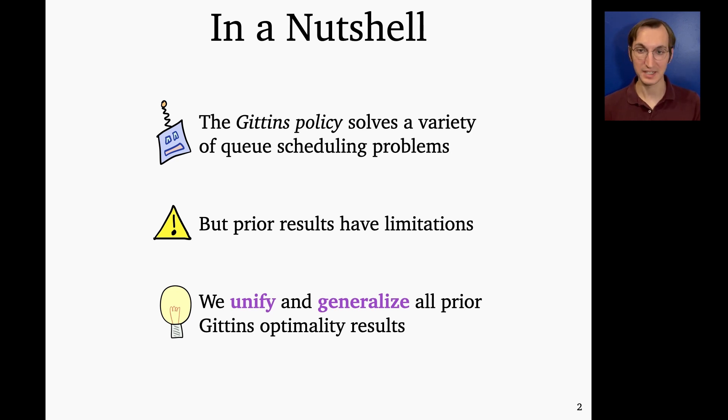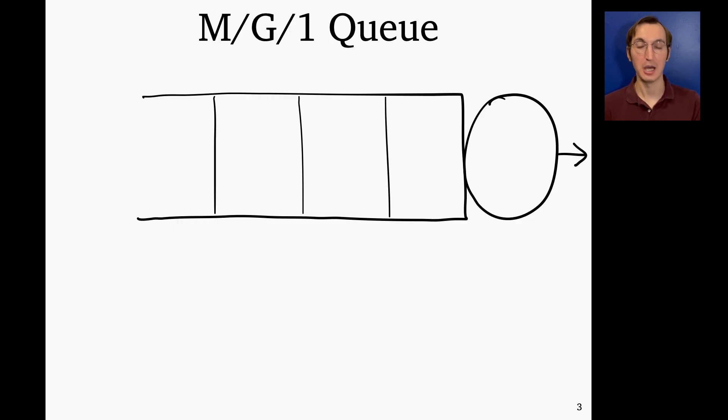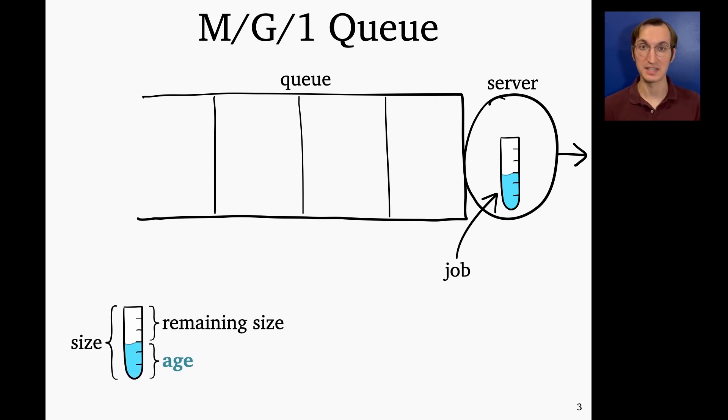So let's get into it. I'm going to start by telling you about the M/G/1 queue, which is the queuing model we're going to be working with in this talk. So we've got a single server, which can serve one job at a time, and a queue, which can hold any number of jobs waiting. This is what a job looks like. We're going to draw it like a test tube whose height is its size or service requirement. That's how long we need to serve the job before it completes, and we'll represent that service as filling the job with water. So the amount of service a job has received so far is its age, and the rest of the job is its remaining size.